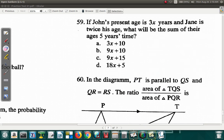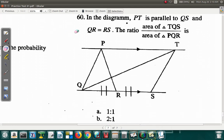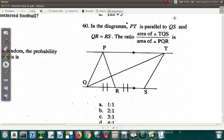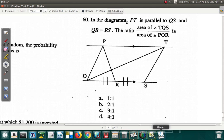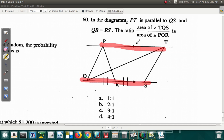Let's look at question 60. This is saying in the diagram PT is parallel to QS. So PT is parallel to QS. You can see it from the two arrows here. And QR is equal to RS. You can see it from the two strokes and two strokes.